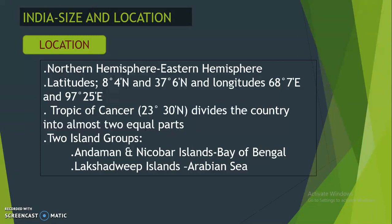Now, what are the latitudes and longitudes of India? This is factual knowledge. India's latitudes are 8°4' North to 37°6' North. The longitudes are 68°7' East to 97°25' East. You should always remember these coordinates.